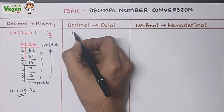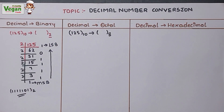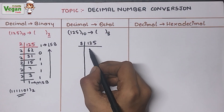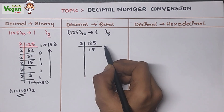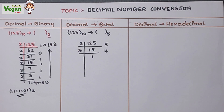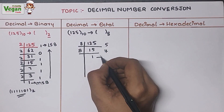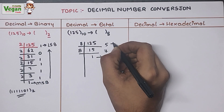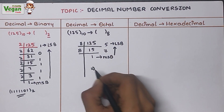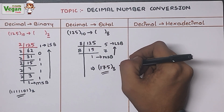Next, let's convert the same decimal value 125 to octal. The base of octal is 8, so divide by 8. 125 ÷ 8: remainder is 5. Then 15 ÷ 8: remainder is 7. We cannot further divide 1 by 8, so we stop. Writing from most significant bit to least significant bit, the octal value is 175 base 8.